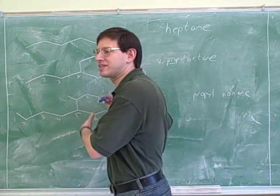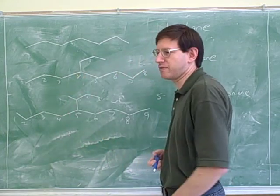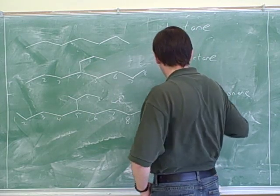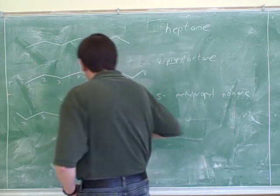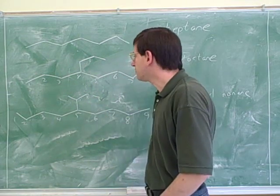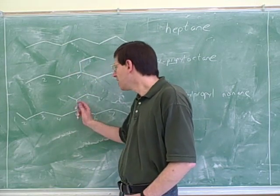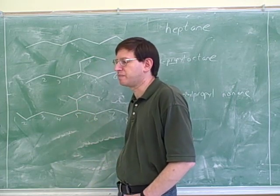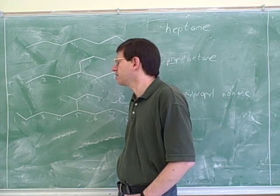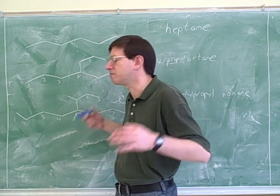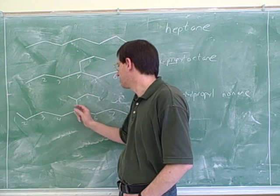So that would be propyl for that part of the substituent. Now we need to name the substituent that's on the substituent. Well, here's that substituent that's on there. How many carbons are there on that substituent on the substituent? One. And what's the name for that? Methyl. Now we need to say where the methyl group is. Because theoretically, it could have been here. But it's here instead. So we need to number the substituent. Now the rule for numbering the substituent is that the number one carbon in the substituent is always the carbon that is connected to the parent chain. That's very important to have in your notes.